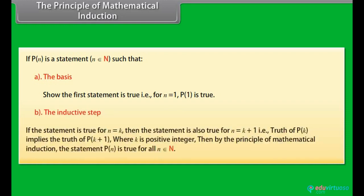If the statement is true for n equal to k, then the statement is also true for n equal to k+1, that is, the truth of P(k) implies the truth of P(k+1), where k is a positive integer. Then, by the principle of mathematical induction, the statement P(n) is true for all n belonging to N.